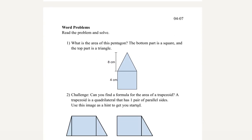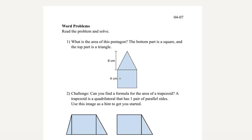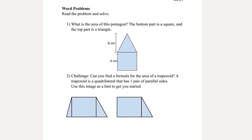Let's move on to some word problems. What is the area of this pentagon? The bottom part is square and the top part is a triangle.